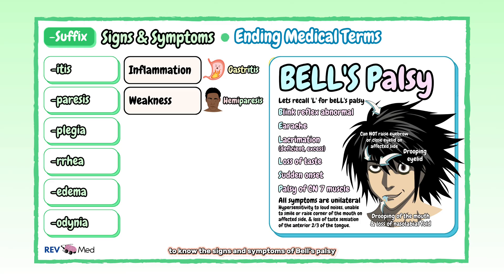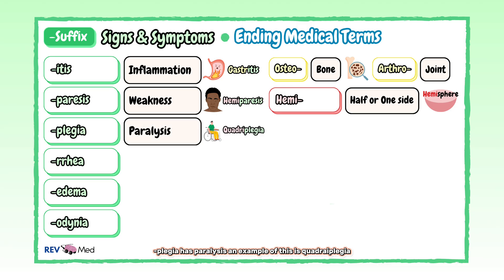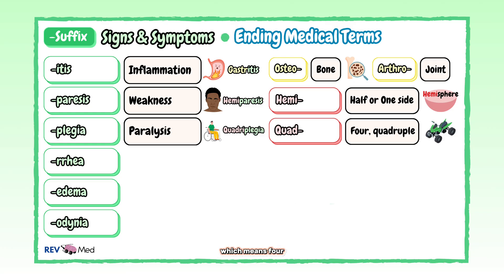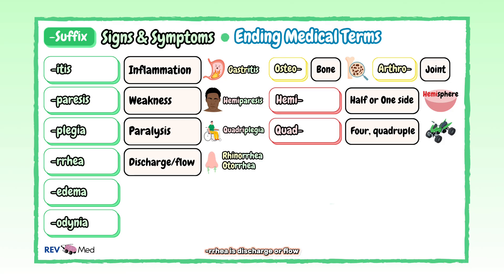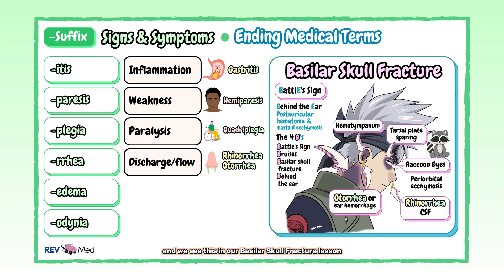This is a great mnemonic to know the signs and symptoms of Bell's palsy. "-Plegia" is paralysis. An example of this is quadriplegia, which uses another prefix that we learned meaning four. And this is when we have paralysis of all four limbs. "-Rrhea" is discharge or flow. We see this in our basilar skull fracture lesson with rhinorrhea of CSF, or otorrhea of CSF. Rhino we know means nose, and oto means ear.